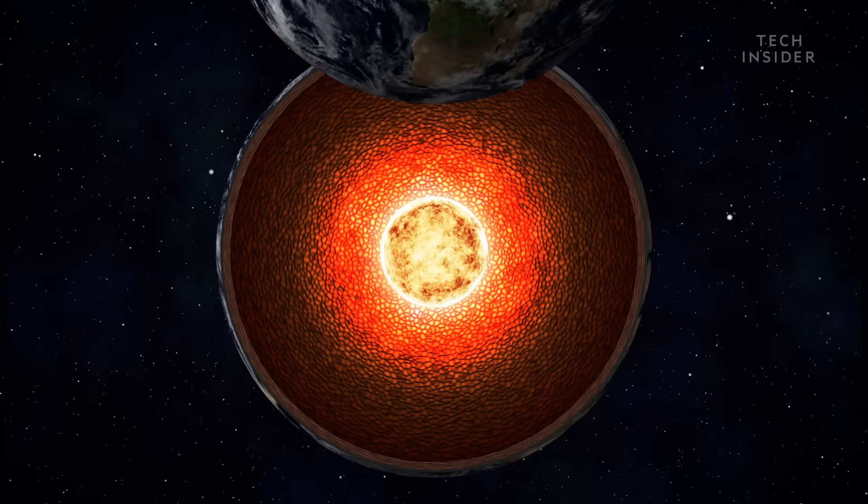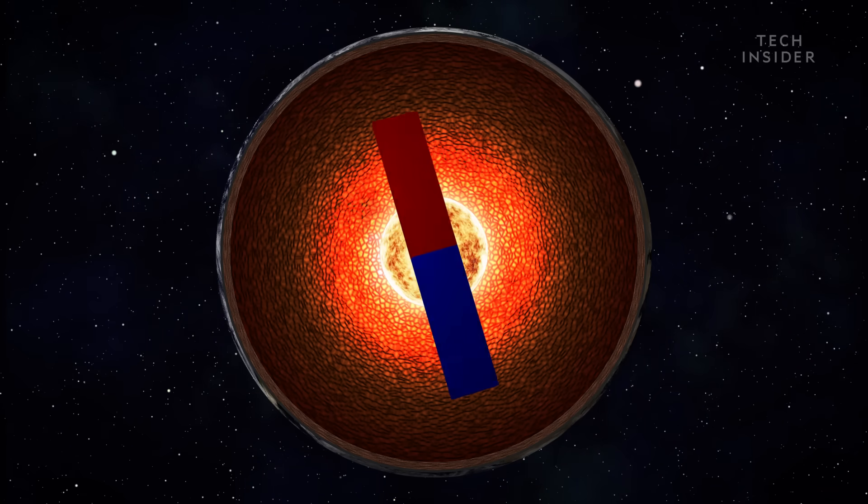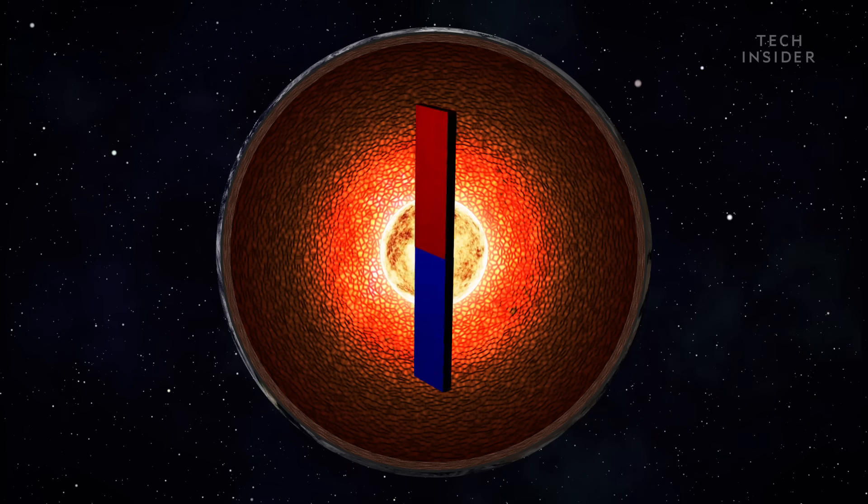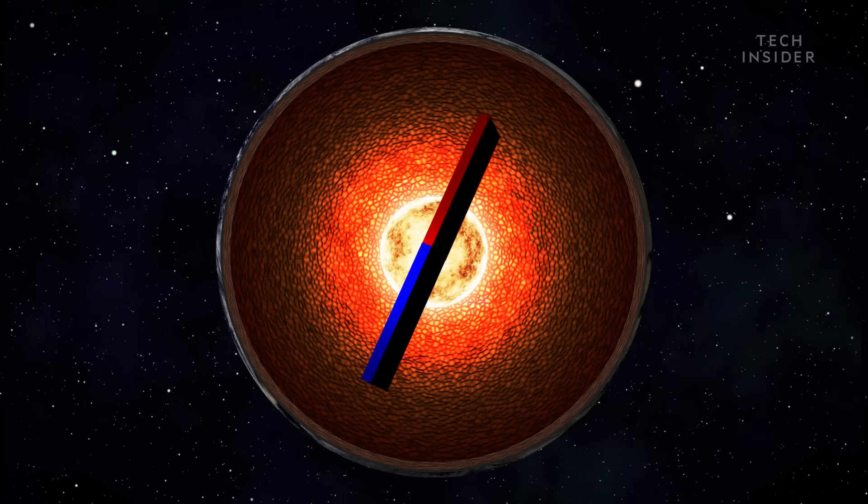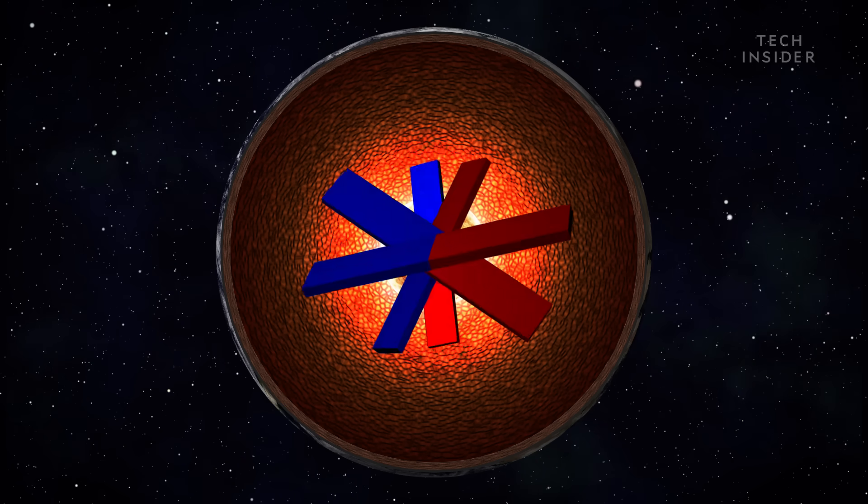But sometimes, Earth doesn't always just have a single magnetic North and South Pole. Evidence suggests that for hundreds to thousands of years at a time, our planet has had four, six, and even eight poles at a time.